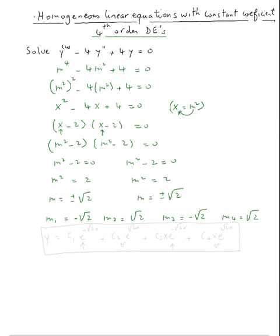So using the superposition, we get y equals c₁e^(m₁x), so negative square root of two x, plus c₂e^(m₂x) square root of two x, plus c₃e^(m₃x) negative square root of two x, plus c₄e^(m₄x), which is square root of two x.